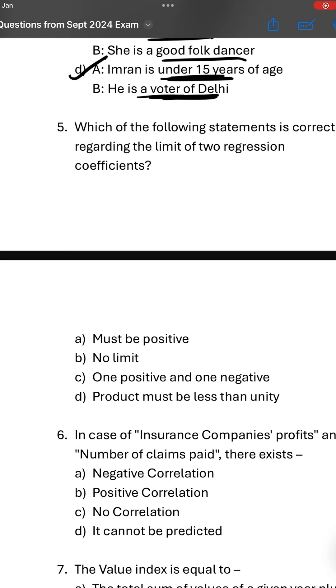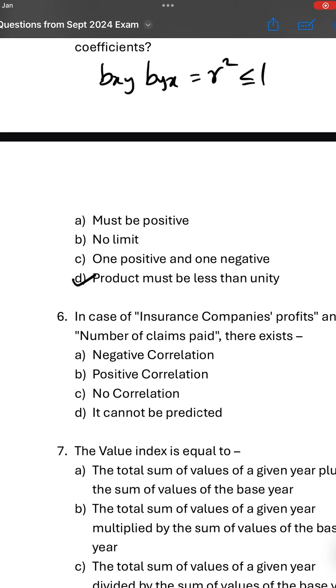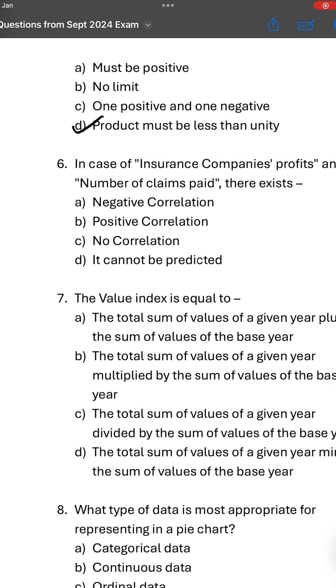Which of the following statements is correct regarding limit of two regression coefficients, which is Bxy and Byx? We know that their product is R square, coefficient of determination, which has to be less than or equal to 1. So that is the major limit. Option D says their product must be less than unity. It should be less than or equal to unity.